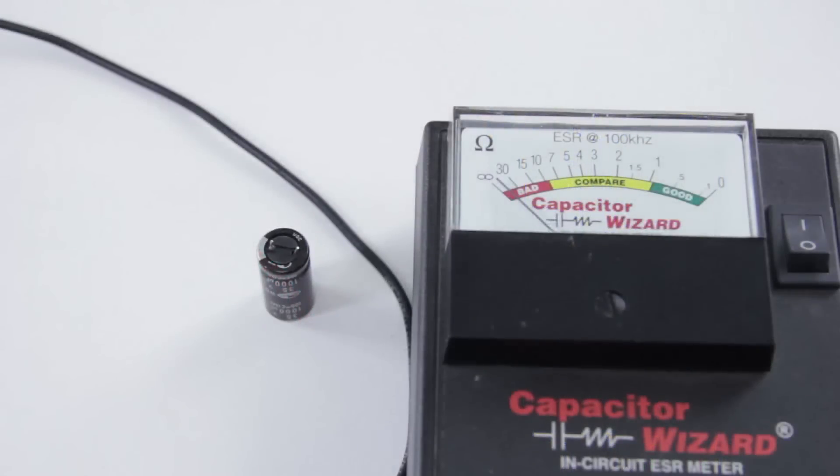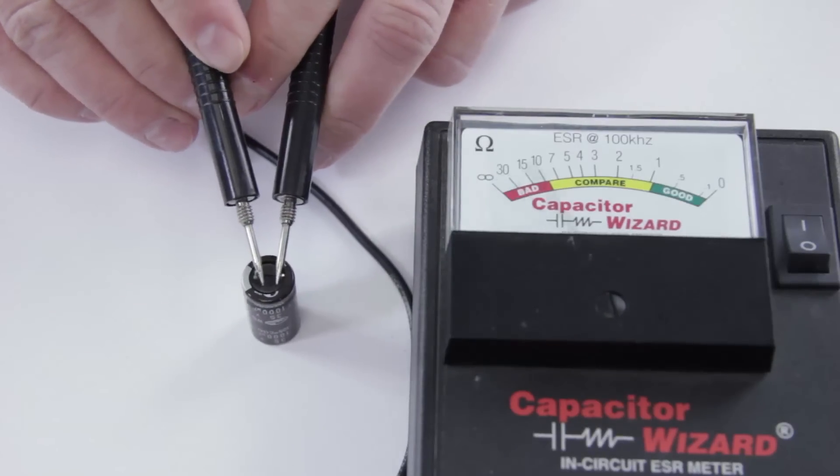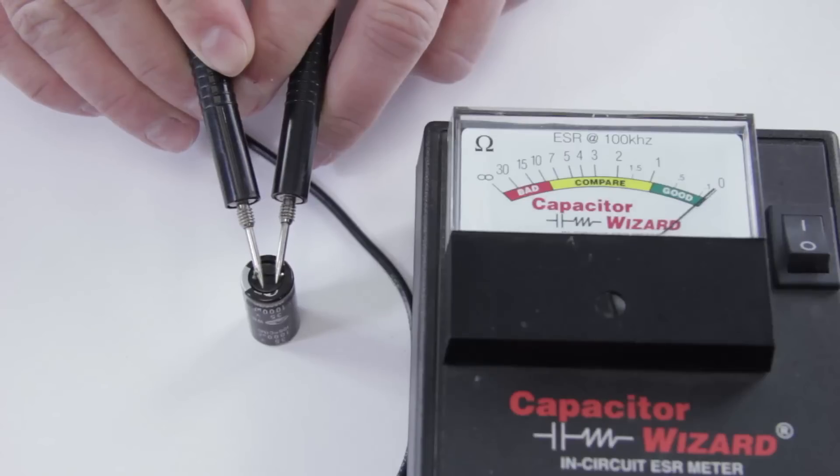Another way to check for bad caps is to use an ESR meter. This is used to check in circuit for bad caps and can pick up bad caps that are not visible to the naked eye. A good cap when you check should ring and drop all the way down to zero ohms pretty much.